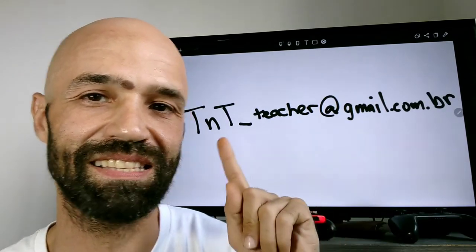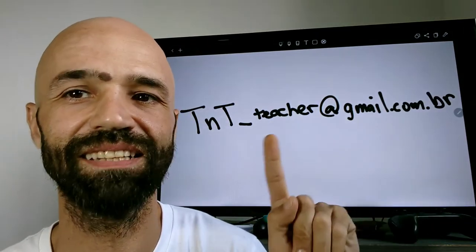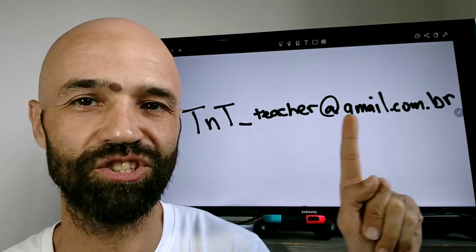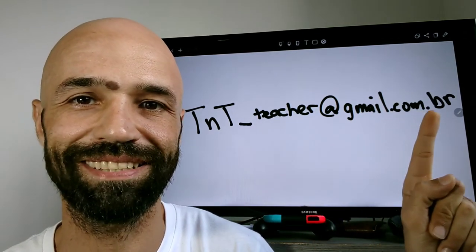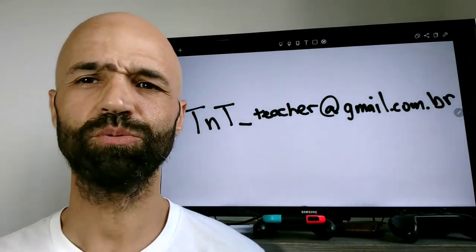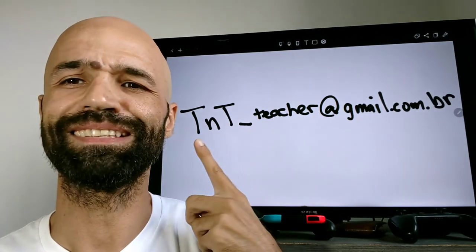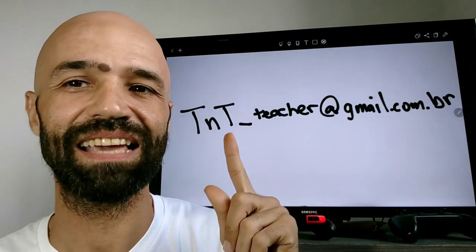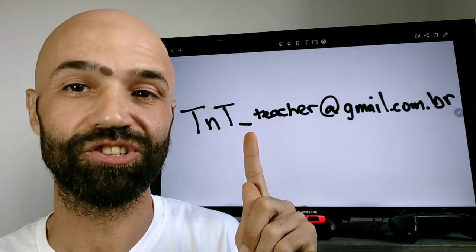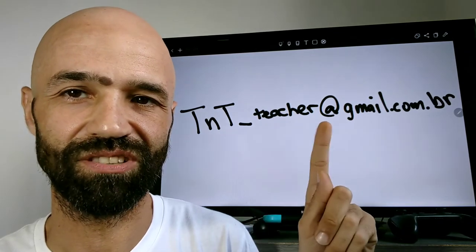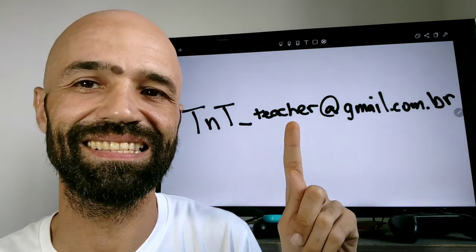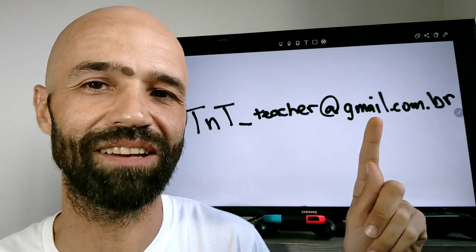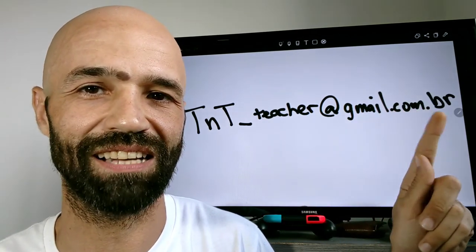Então, vamos lá. Esse email aqui eu inventei, ok? Então, TNT underscore teacher at gmail dot com dot br, ok? So, what's your email? My email is TNT, ok? Capital T, small t, capital T, underscore teacher, T-E-A-C-H-E-R